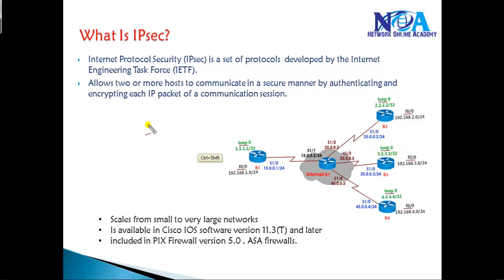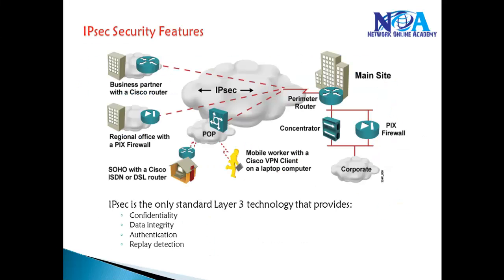IPSec can be implemented individually with IPSec VPNs, or we can implement IPSec protocols over GRE or DMVPN implementations. It supports very small to very large size networks, and this IPSec feature is available in Cisco IOS versions as well as in PIX firewalls and ASA firewalls.